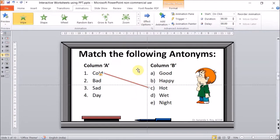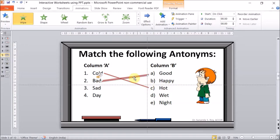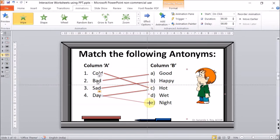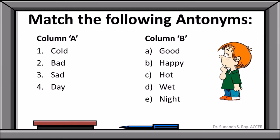Once that's ready, just like we did with the text box, we press Ctrl+D to duplicate the line. We position it near 'bad' — the opposite of bad is 'good'. Again Ctrl+D — 'sad' and 'happy'. Again Ctrl+D — 'day' and 'night', the opposite of day. We now have four words with their animated answer lines. In the slideshow, you click one by one and the lines appear: cold-hot, bad-good, sad-happy, day-night.